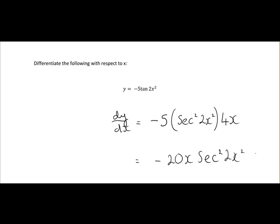Just to recap: we had minus 5; tan differentiates to sec²(2x²). We differentiate the number beside tan — when we differentiate 2x², we get 4x, and we multiply by that. Minus 5 by 4x gives you minus 20x times sec²(2x²).